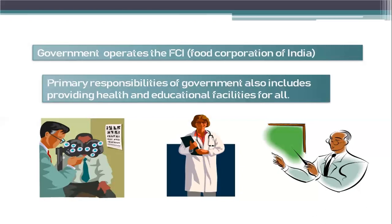Private schools are generally located in urban areas and charge high fees. Government intervention is required for setting up schools particularly in rural areas, so that children of poor families also get an opportunity to educate themselves. The government should also play a significant role in providing higher and professional education.